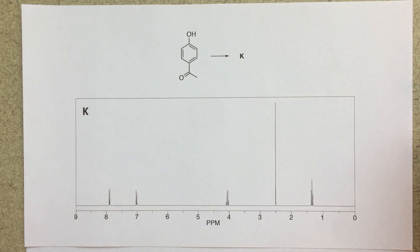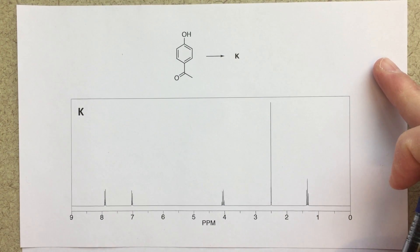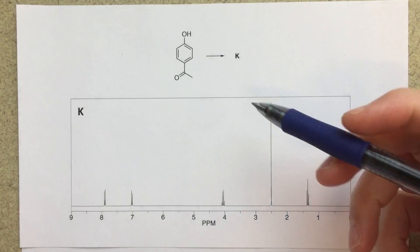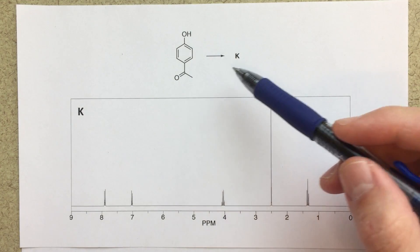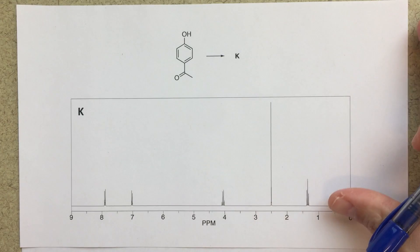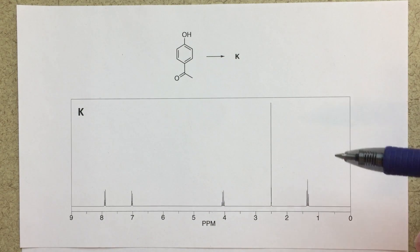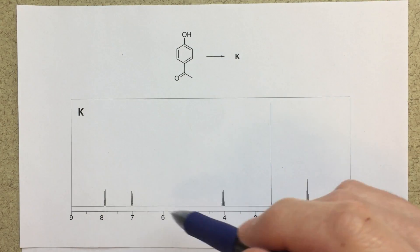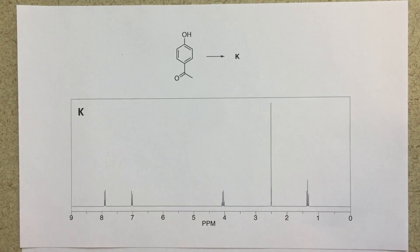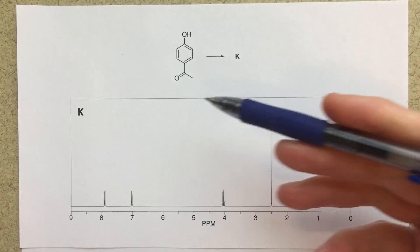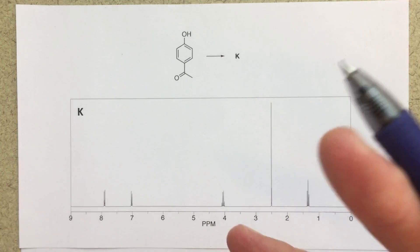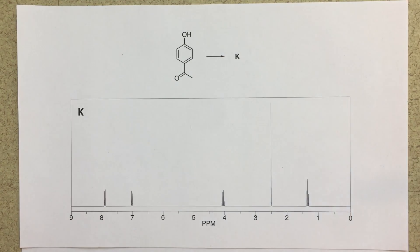All right, so this is another cool little NMR problem. Basically what we're given is a starting material. Some transformation happens, we're not told any information about that. But then we have this NMR for the product. So we're supposed to put this together and figure out what is a plausible structure for our product.